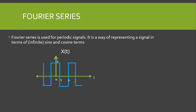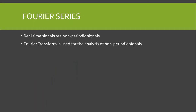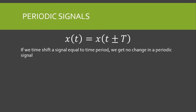Fourier series is used for periodic signals, but real-time signals are non-periodic. For the analysis of non-periodic signals we use the Fourier transform. Because we have continuous time signals as well as discrete time signals, we have the continuous time Fourier transform and the discrete time Fourier transform. So Fourier transform is used for aperiodic signals and Fourier series is used for periodic signals.